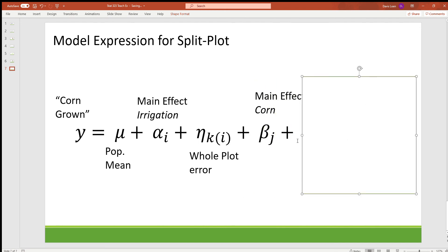Now we still have the main effect of the corn and the interaction effect, but now the final error term that we see is for the single split plot instead of just the error from the experimental unit like we would have seen in CRD.